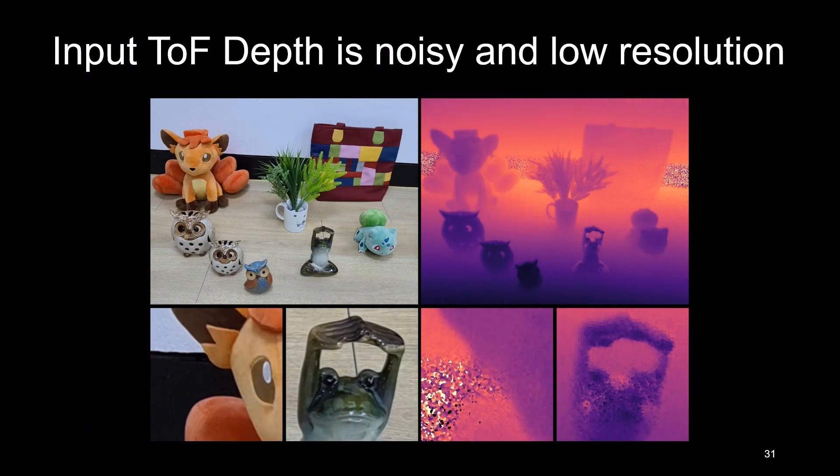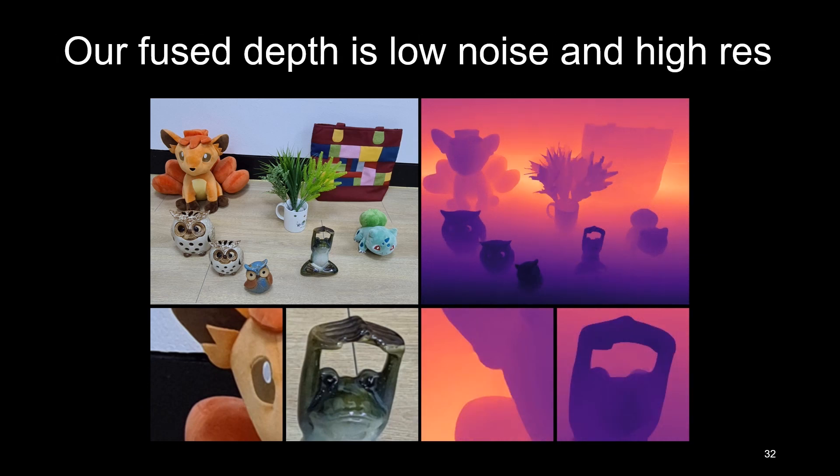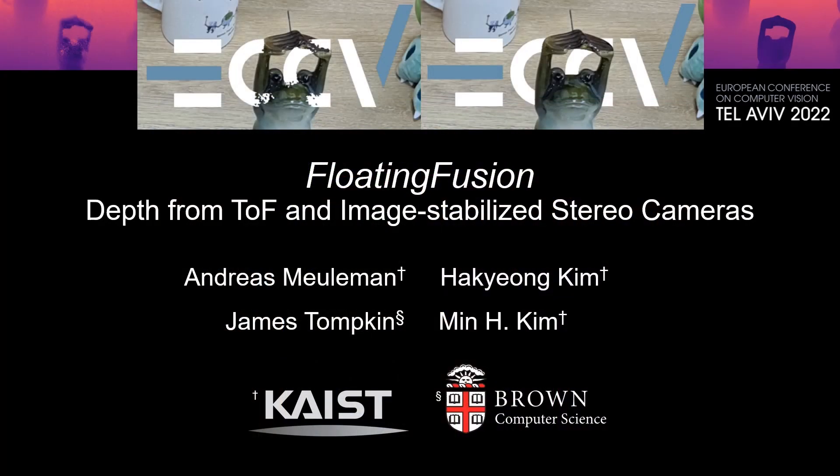Our approach takes an uncalibrated RGB image pair and ToF depth, and estimates a noise-free high-resolution depth map. There you have it, floating fusion. Thanks!